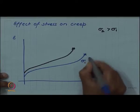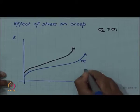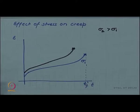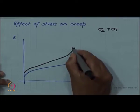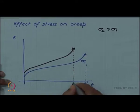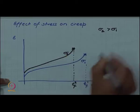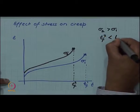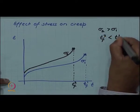If we have, let us say, a creep life of Tf1 at σ1, then the creep life Tf2 at σ2 is shorter. So, Tf2 is shorter than Tf1.